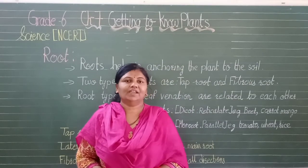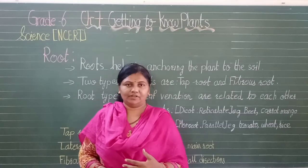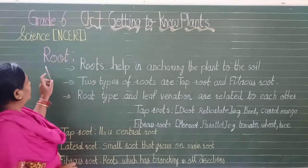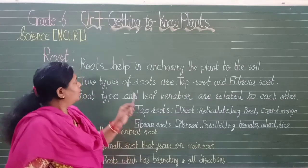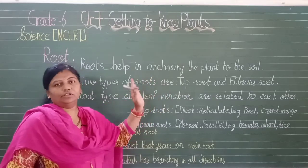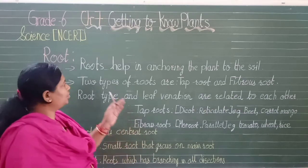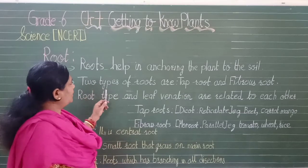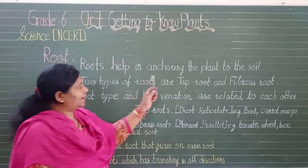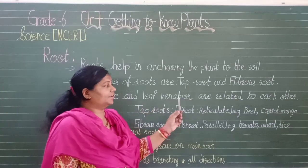The stem carries water and minerals through different parts of the plant — it works like a two-way street, carrying materials upward and downward. Now let us learn about the root. Roots help in anchoring the plant to the soil, keeping the plant standing erect. There are two types of roots: taproot and fibrous root.